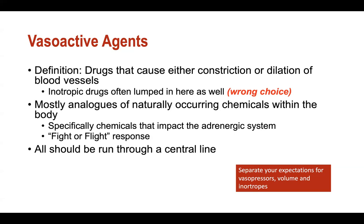Almost all of your vasopressors are basically laboratory manipulations of naturally occurring chemicals - catecholamines and hormones that are circulating within your system. That's really important because the majority of our agents are naturally enhancing agents that impact either alpha, beta, or the direct vascular level.